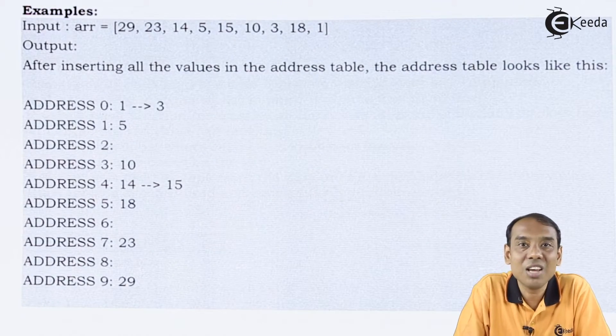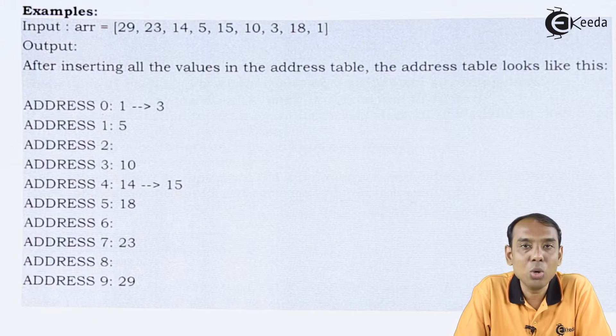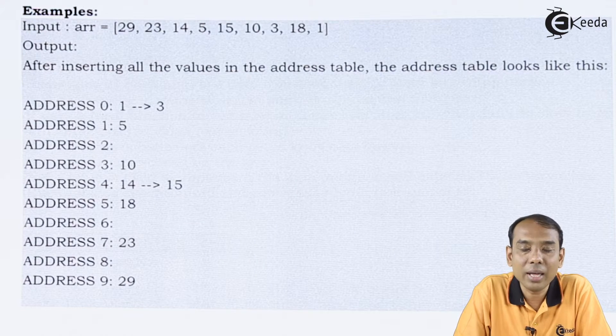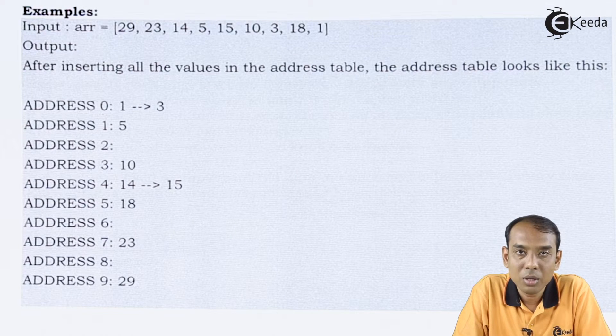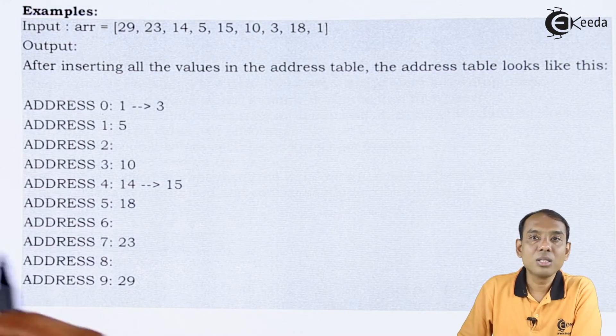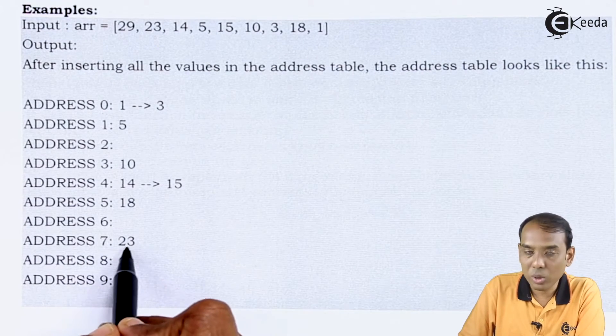The address values I am getting are different. So in case of this hash function, the address number 6 is null. Then I move to address number 7, in which I have the value stored as 23.